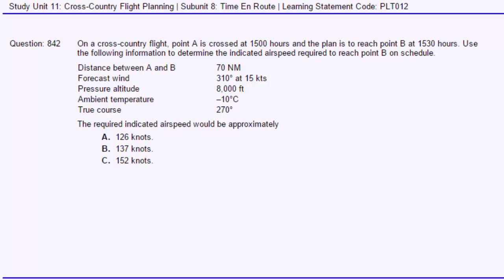On a cross-country flight, point A is crossed at 1,500 hours and the plan is to reach point B at 1,530 hours — in other words, 30 minutes. Use the following information to determine the indicated airspeed required to reach point B on schedule. The distance between A and B is 70 miles, so let's use our flight computer to calculate our ground speed, and once we have that, we'll be able to determine our indicated airspeed.